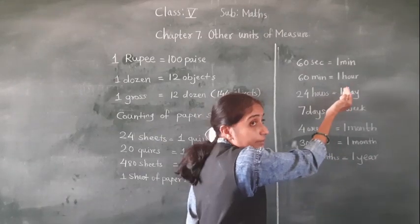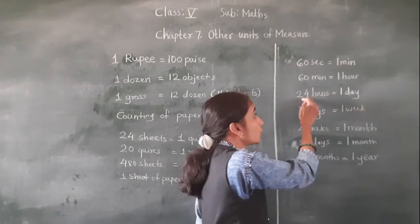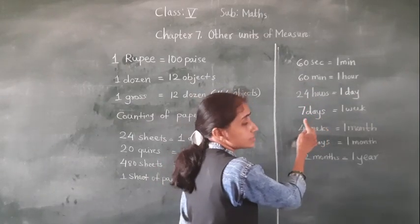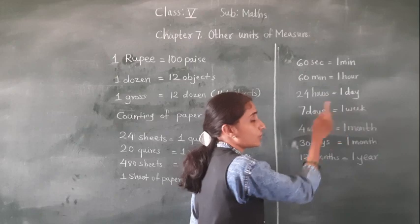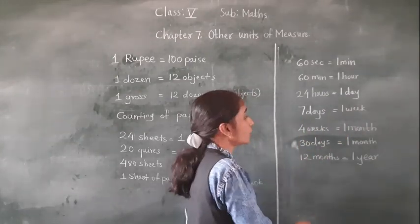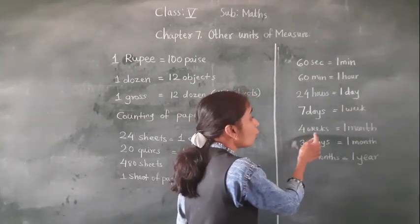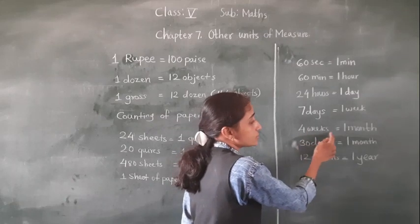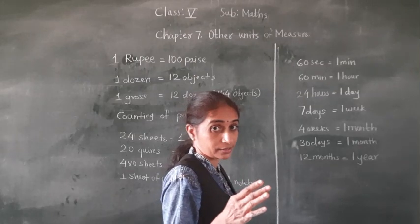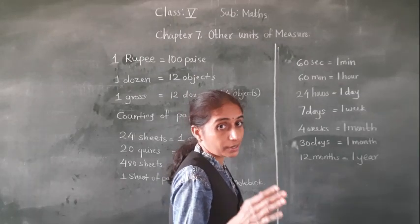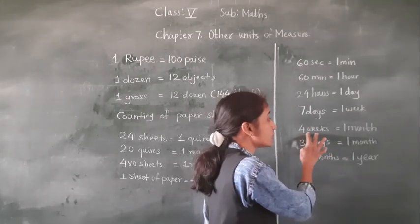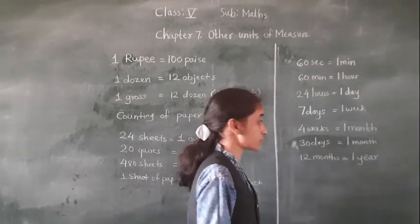In 1 day, how many hours are there? 24 hours. Now, 7 days — 7 days means 1 week. 1 week means 7 days. Now, 4 weeks. 4 weeks is equal to 1 month. In the month, if you take your calendar, you will see how many weeks are there in a month — 4 weeks.